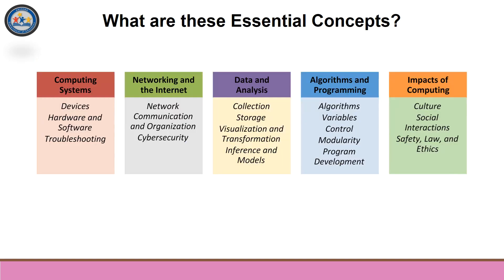So what are these essential concepts? They're categories that represent major content areas in the field of computer science. They represent specific areas of disciplinary importance rather than abstract, general ideas. Each essential concept is supported by various sub-concepts that represent specific ideas within that concept. The figure on screen provides a visual representation. Each concept is color-coded to differentiate it from the next, and the color scheme is the same as shown on this slide. All grades are color-coded in the same way, meaning that in all grades, the essential concept impacts of computing will be in gold.